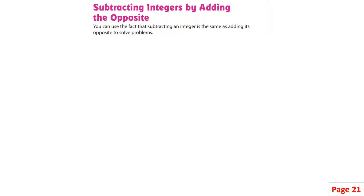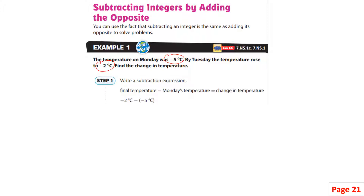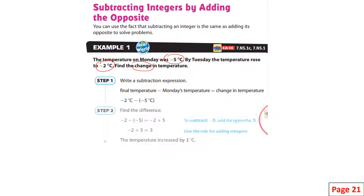Subtracting integers and adding the opposite: the temperature on Monday was negative five degrees Celsius. By Tuesday the temperature rose to negative two. Find the change in temperature. The final temperature minus Monday's temperature gives the change. To subtract negative five is the same as adding its opposite — positive five. So negative two plus five is positive three. The temperature increased by three degrees.